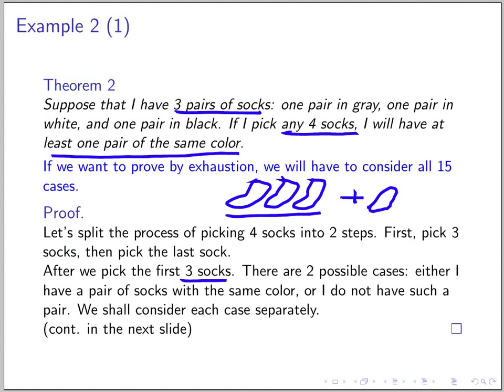Hi, last time we wanted to prove this theorem. Suppose I have three pairs of socks: one pair in gray, one pair in white, and one pair in black. If I pick any four socks, then I will have at least one pair of the same color. This is the extension of what we have proven in class where we have only two pairs.